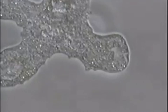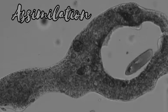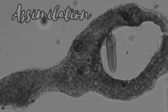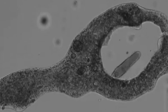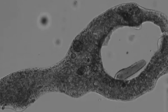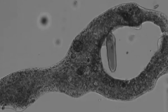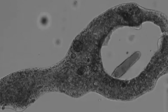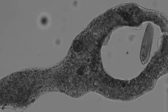The fourth step is assimilation. A part of the food absorbed is used to produce energy. This energy is utilized to convert simple nutrients into complex compounds, which are helpful in the growth and development of the organism.